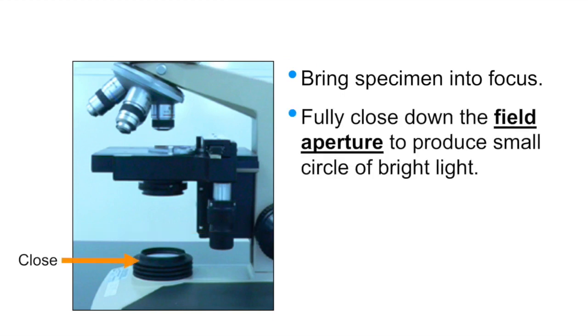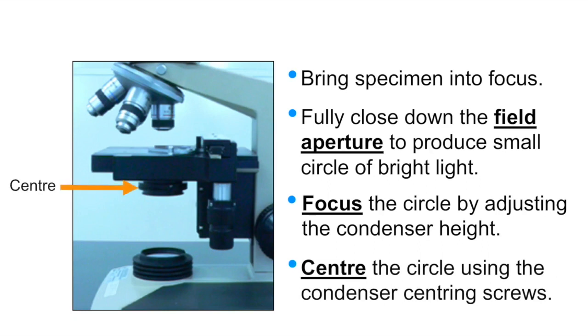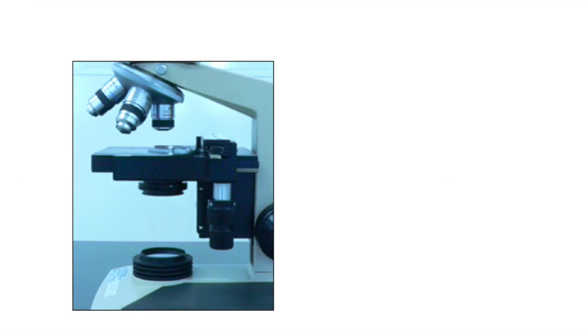We then fully close down the field aperture, if able to do so, to produce a small circle of bright light. We then focus the edges of that circle by adjusting the condenser height adjustment knob, in this case hidden from view on the left-hand side. We then center the circle of light using the condenser centering screws, if present, before finally reopening the field aperture diaphragm until it's just outside of the field of view.